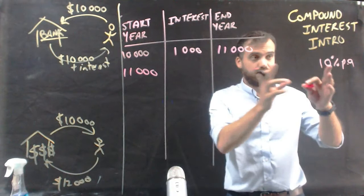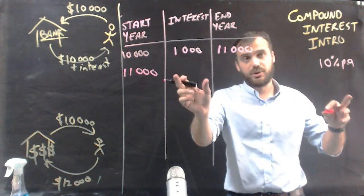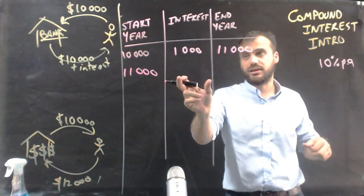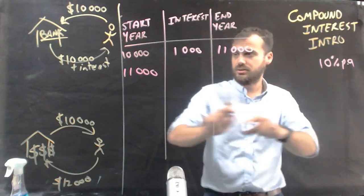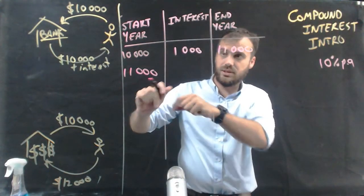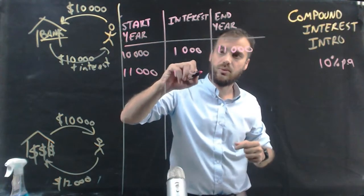And now they need to pay you 10% per annum, per year if you leave it in there. So 10% of $11,000 is $1,100.